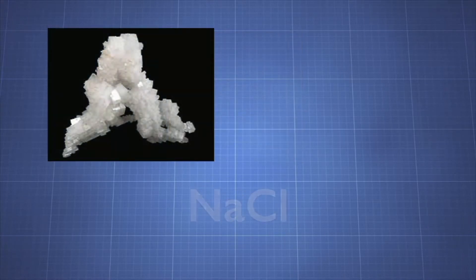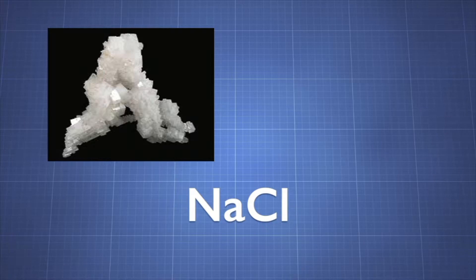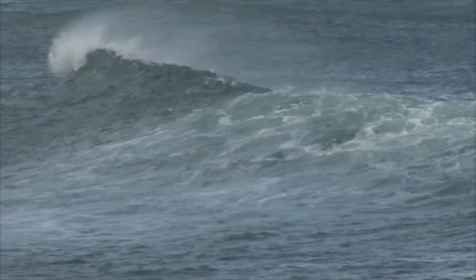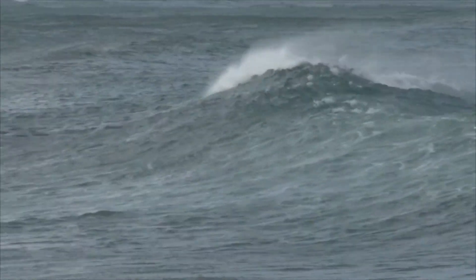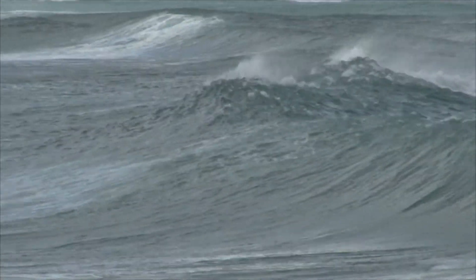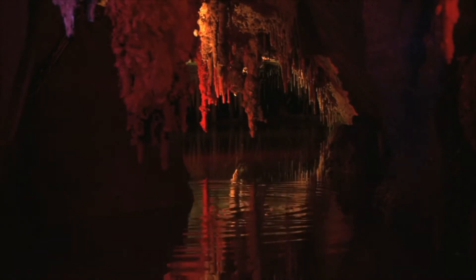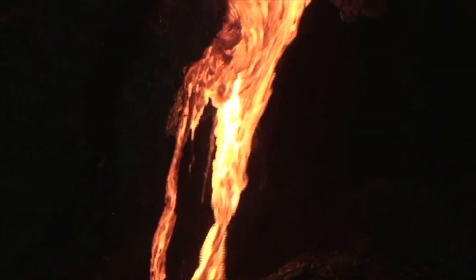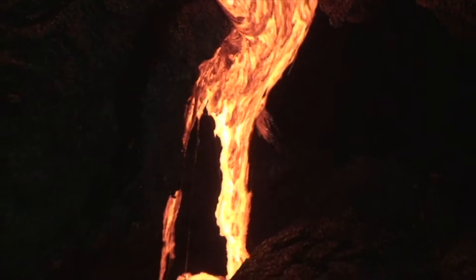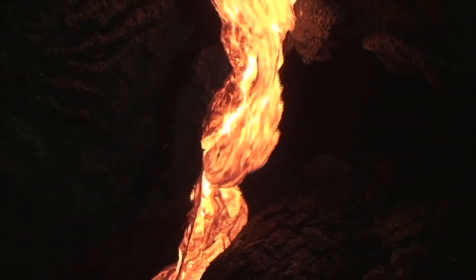We know the mineral halite as table salt. Halite is composed of the elements sodium (Na) and chloride (Cl). Minerals form in many natural ways. Some minerals form when salt water on Earth's surface evaporates. Some minerals form as water seeps through crevices and rocks underground. Other minerals form from the cooling and hardening of hot molten rock.